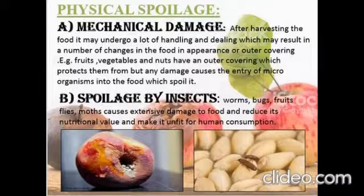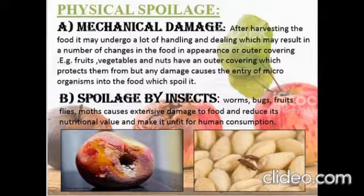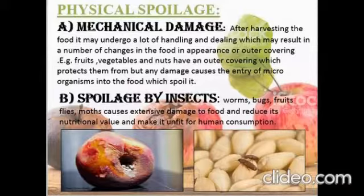Spoilage due to pests and rodents: worms, bugs, fruit flies, and moths cause extensive damage to food, reduce its nutritional value, and make it unfit for human consumption. Pests and rodents can damage food in two ways — direct damage by eating away the food, and indirect damage by contaminating it with rat droppings, excreta, and urine, leading to production of disease-causing toxins which ultimately lead to food spoilage.